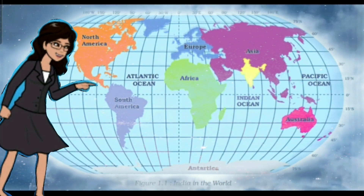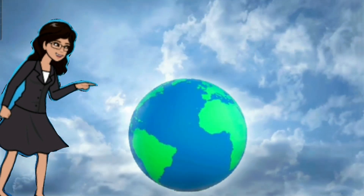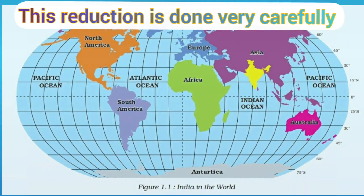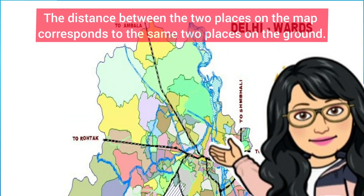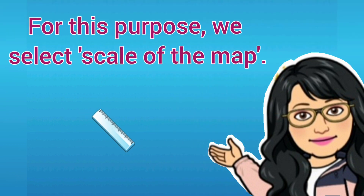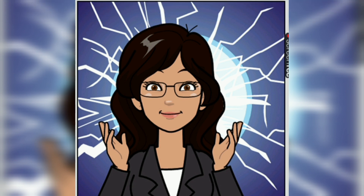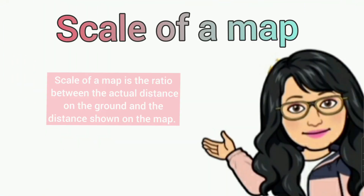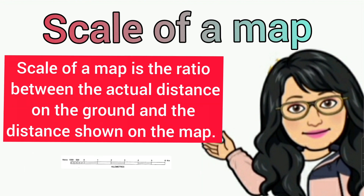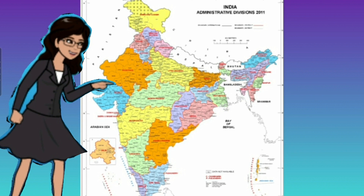You have learned in the previous video that maps are drawings which reduce the entire world or a part of it to fit on a sheet of paper. But this reduction is done very carefully so that the distance between two places on the map corresponds to the same two places on the ground. For this purpose we select a scale of the map. A scale of a map is the ratio between the actual distance on the ground and the distance shown on the map.